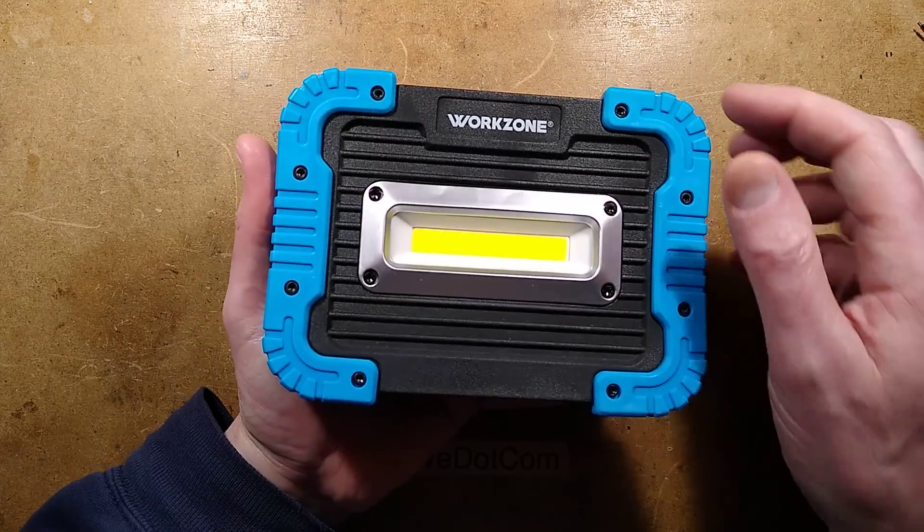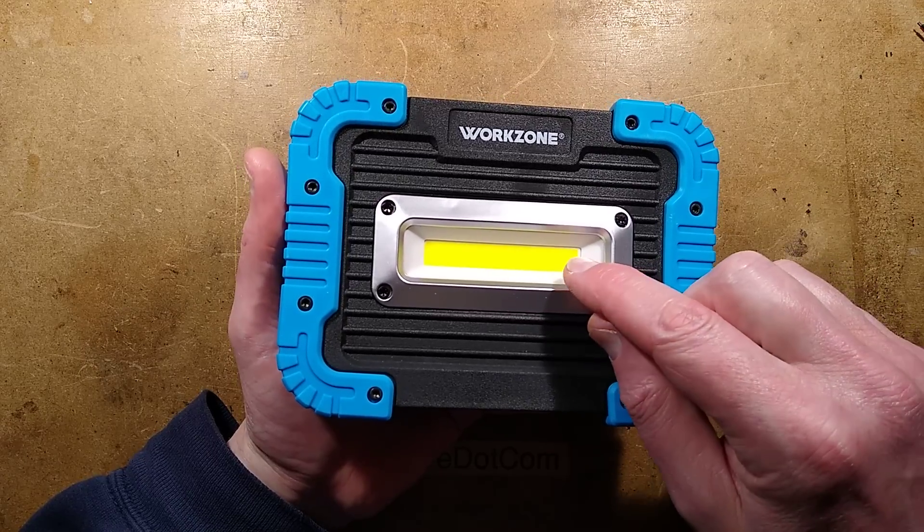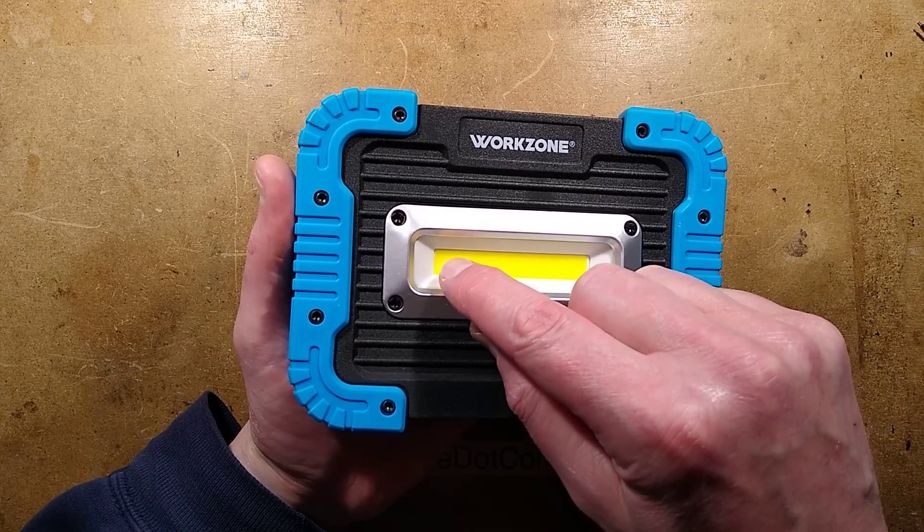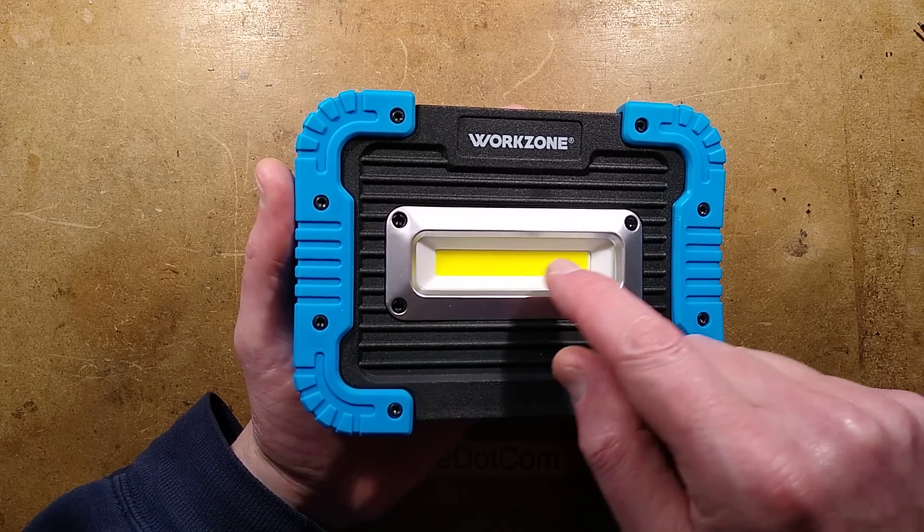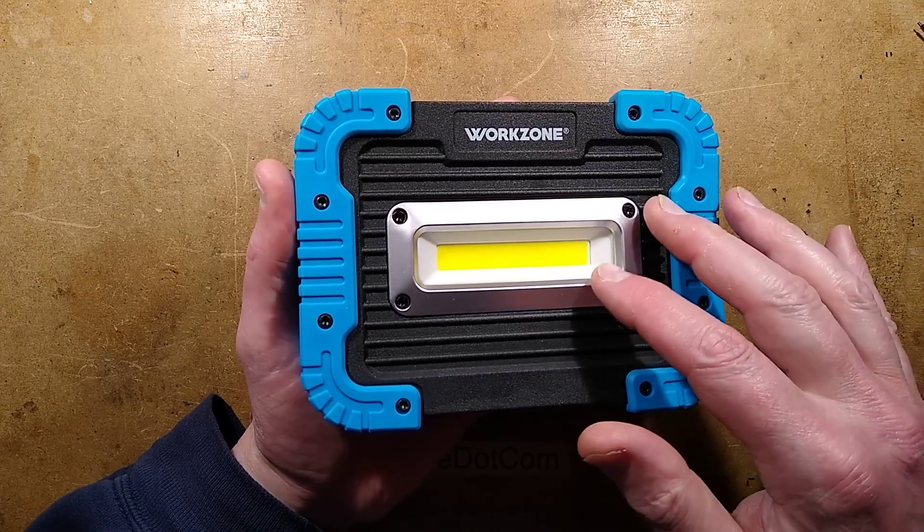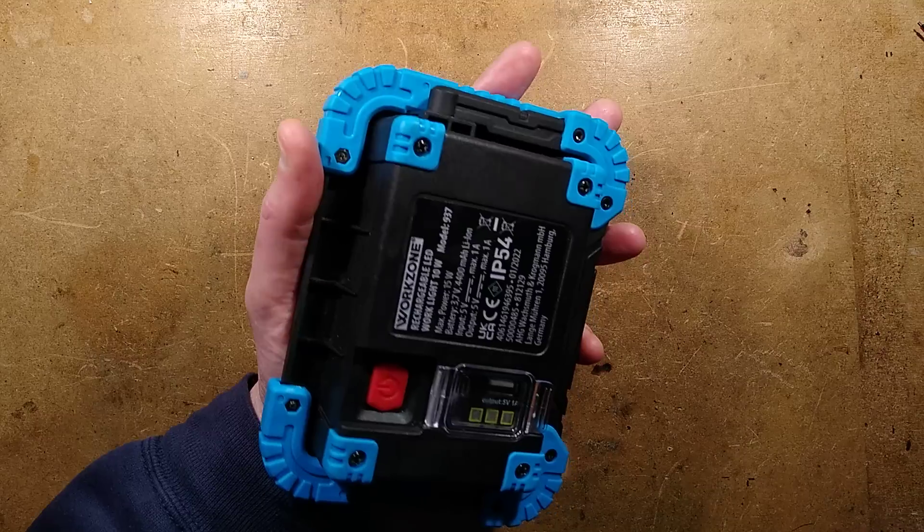The front has the LED itself. It's got 1, 2, 3, 4, 5, 6, 7, 8, 9, 10, 11, 12, 13, 14, 15. It's got 30 chips in it, probably the standard flip chips under the phosphor. Let's open it up.